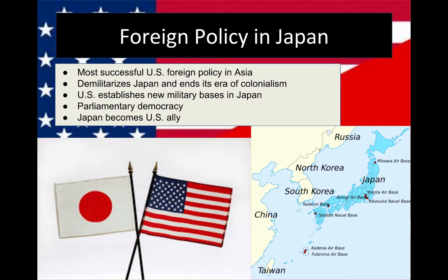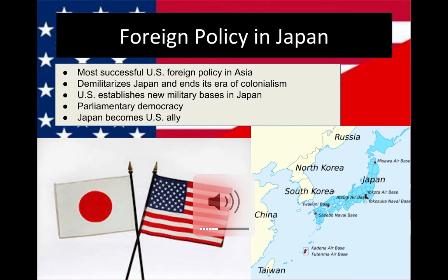In this video, we're going to cover foreign policy in Asia. What you'll see is that it definitely varies from country to country. In general, the countries that develop a more capitalist economy are going to be the ones that have a more favorable relationship with the United States. Japan, just defeated and heavily bombed by the US, actually emerged from the Second World War as an ally of the United States.